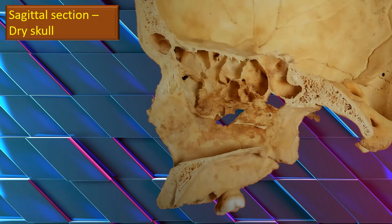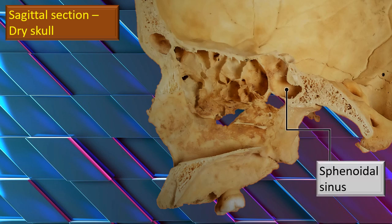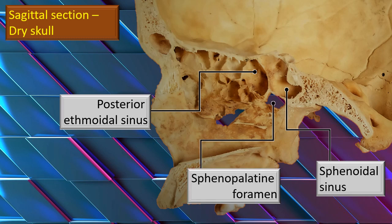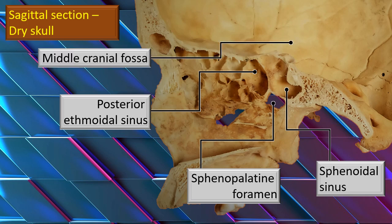Here is a dry skull sagittal section. Let's get the orientation of the sphenoid sinus clearly. Right above is the middle cranial fossa. Immediately below is the pterygopalatine fossa. Posteriorly is the clivus. Right in front — anterolateral, I would say — is the posterior ethmoidal sinus. The sphenopalatine foramen, and as mentioned, above is the middle cranial fossa.